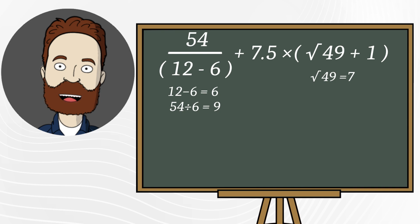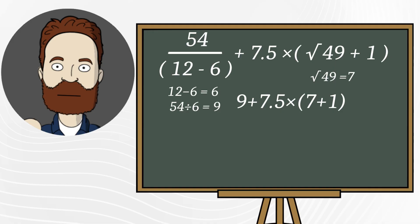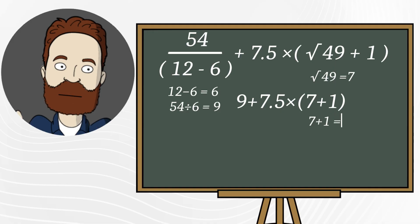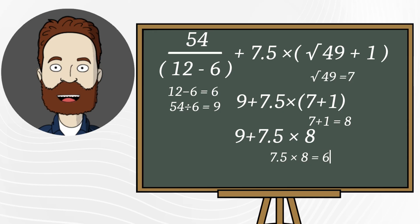We substitute this into our expression. Inside the parentheses again, 7 plus 1 equals 8. Now it looks like this. Next, comes multiplication. 7 and a half times 8 equals 60.